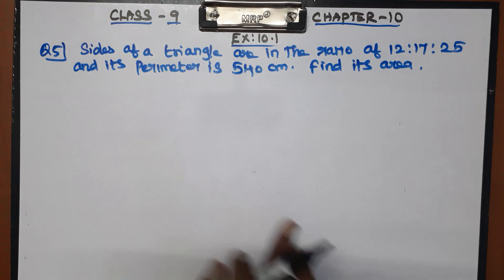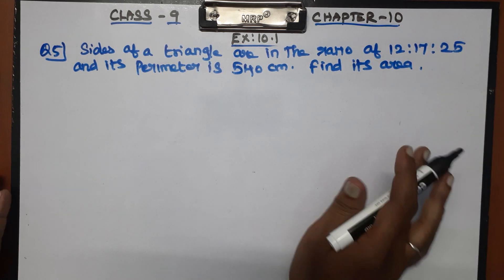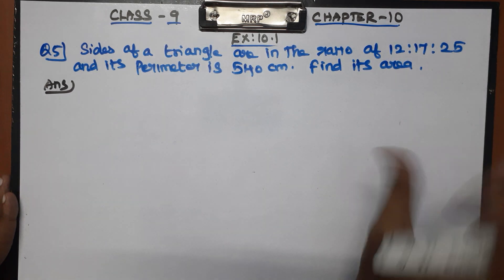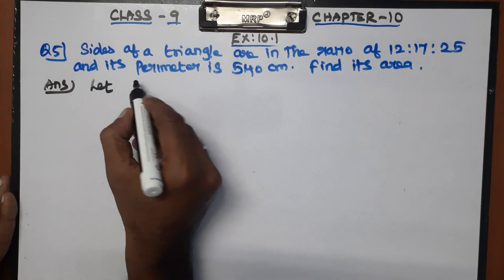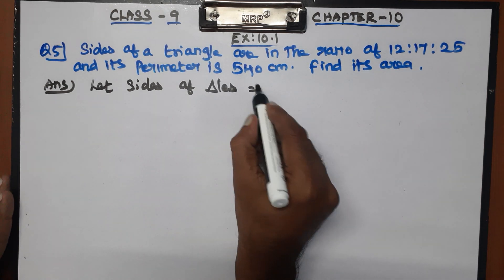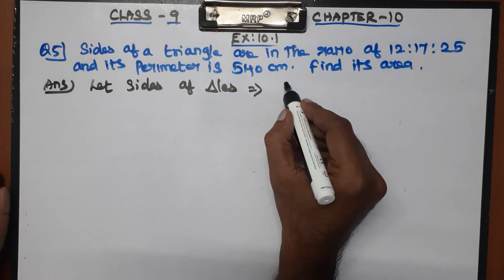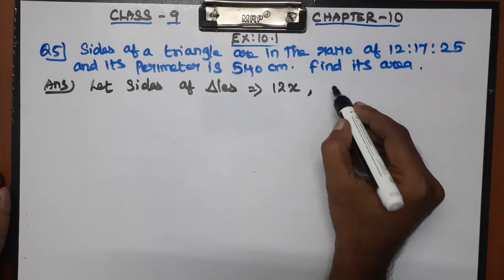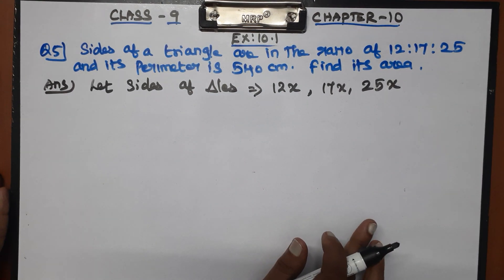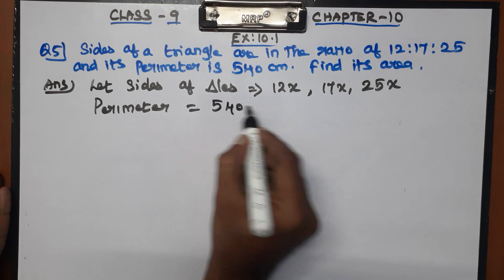We need to find the area of the triangle using Heron's formula. Since the sides are in ratio 12:17:25, let the sides be 12x, 17x, and 25x. The perimeter is equal to 540 cm.